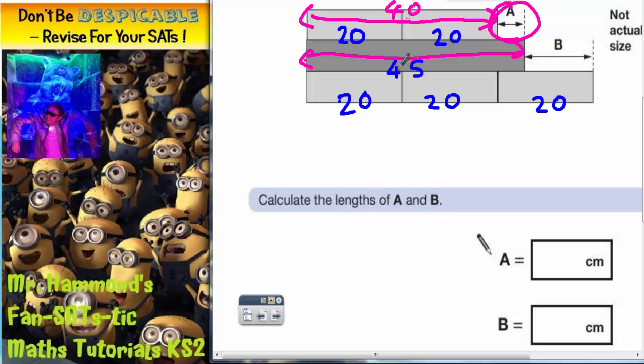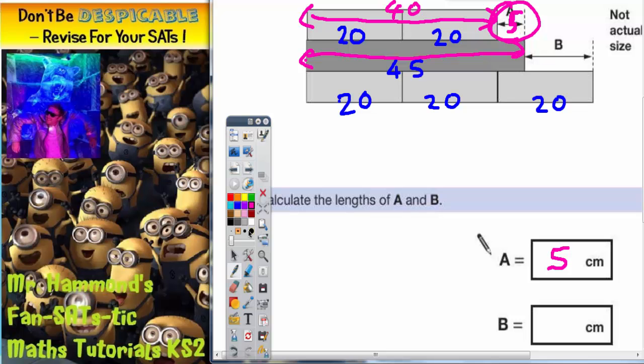What do I add on to 40 to get to 45? Nice and easy, it's got to be 5. So A has to be 5. It's got to be. There's nothing else that will make 40 add up to 45.